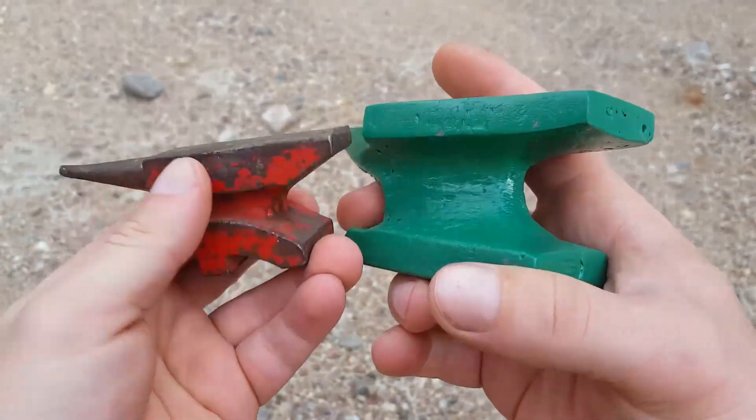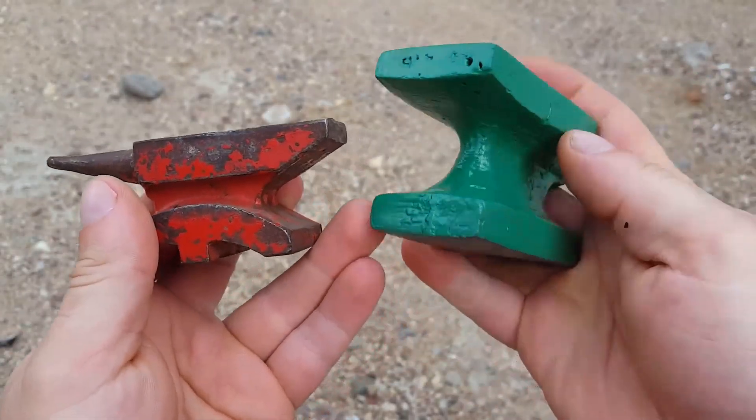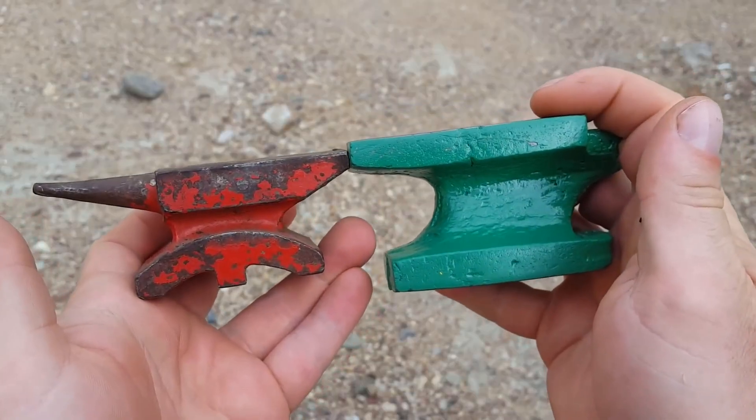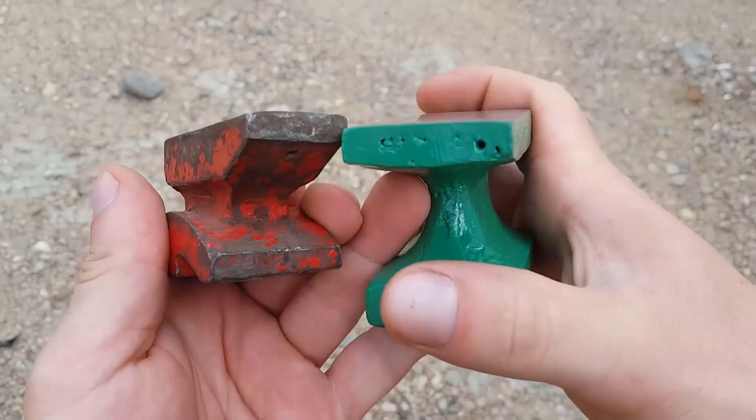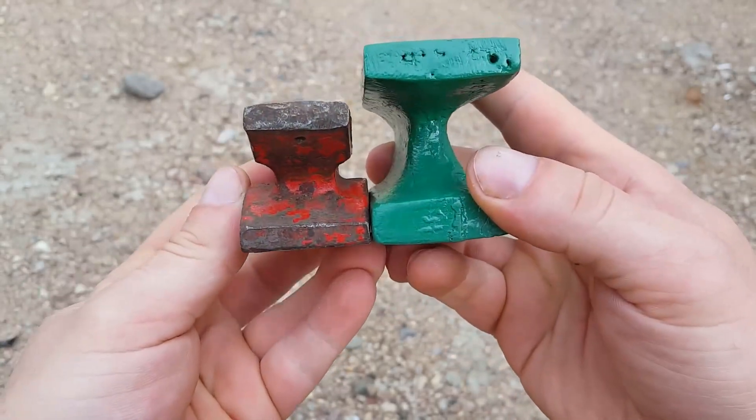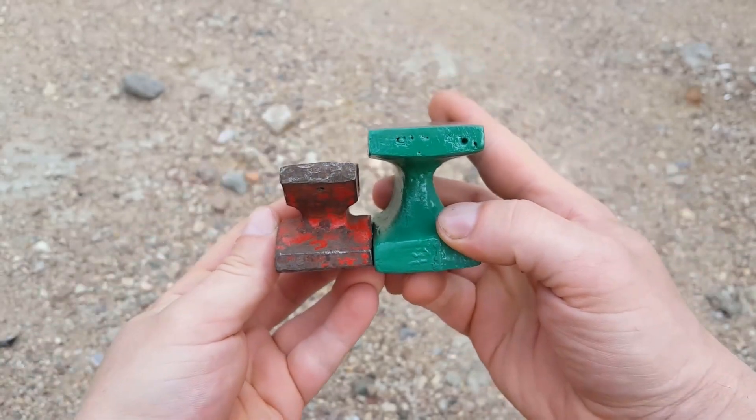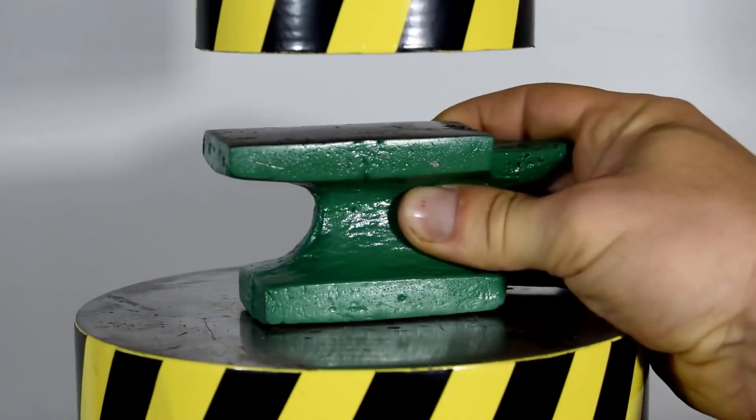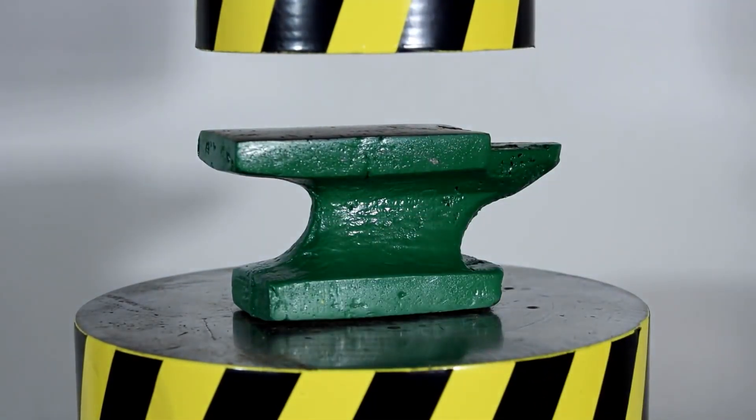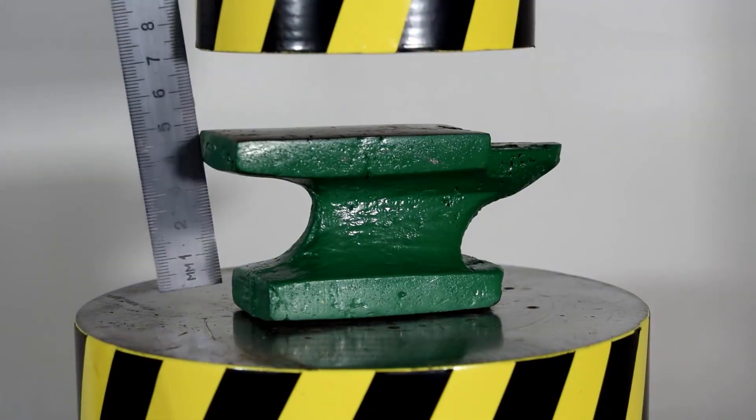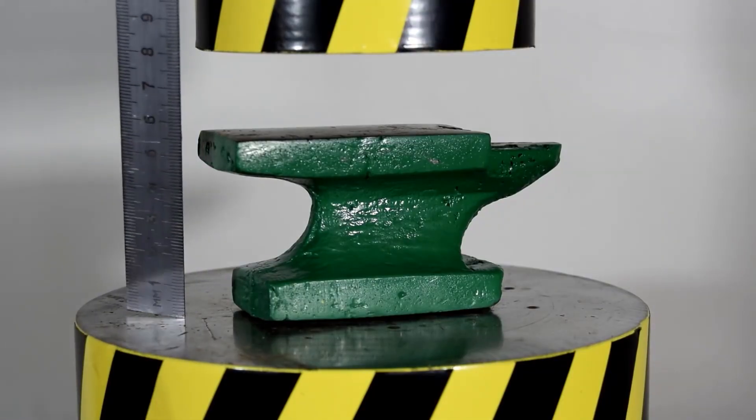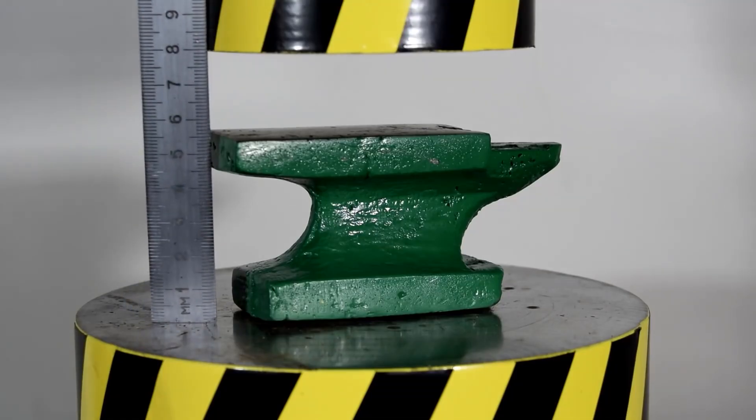Here, for clarity, how they look next to each other. The Soviet anvil is smaller in size and weight. Now we will check how much they will withstand a load of 100 tons. Before the start of the press, we measure the height of each anvil. A Chinese anvil with a height of 55 millimeters.